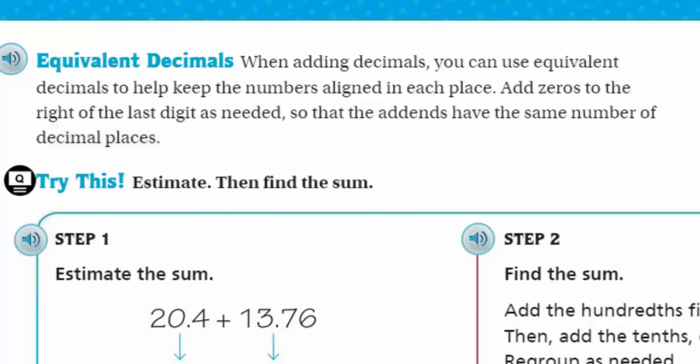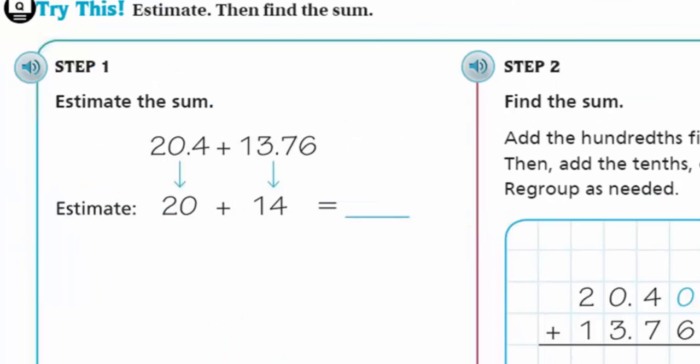Okay. I think I used this in an earlier video. When adding decimals you can use equivalent decimals to help keep the numbers aligned in each place. Add zeros to the right of the last digit as needed so that the addends have the same number of decimal places. Let's look at this. Let's just try this. Let's estimate and then find the sum.